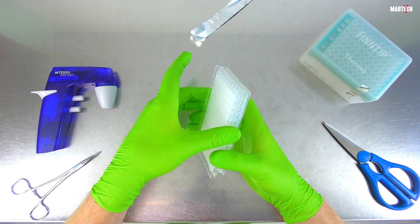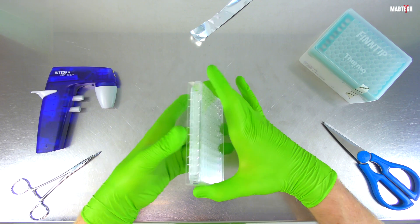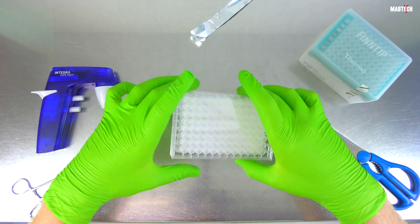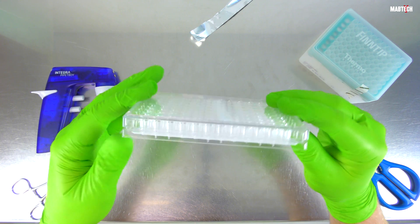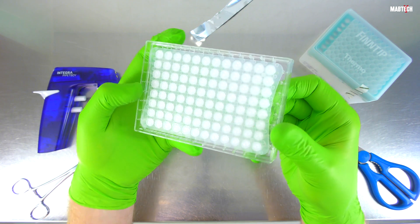While filtration is never used in the ELIspot assay, we still have to consider three points related to the underdrain and how it can affect your ELIspot data if handled incorrectly.